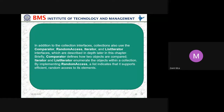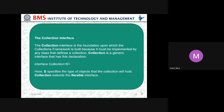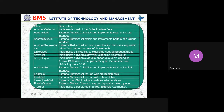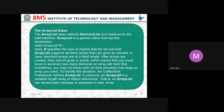Iterator and ListIterator enumerate the objects within a collection — they encapsulate. By implementing RandomAccess, it supports efficient random access of its elements. The Collection interface syntax uses 'E' as the type of object the collection will hold. The standard classes that implement collection interfaces include ArrayList, which extends AbstractList and implements the List interface — declared as class ArrayList<E>. Then LinkedList extends AbstractSequentialList and implements List, Deque, and Queue.